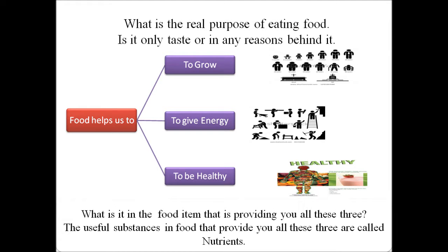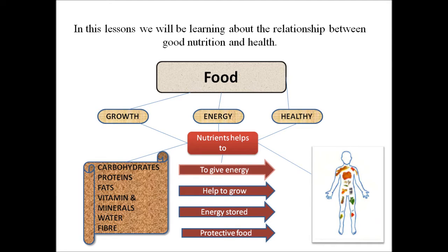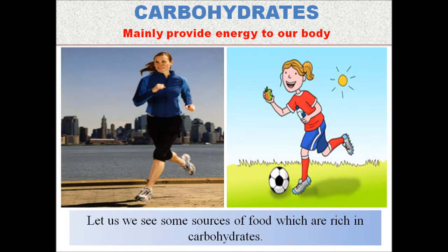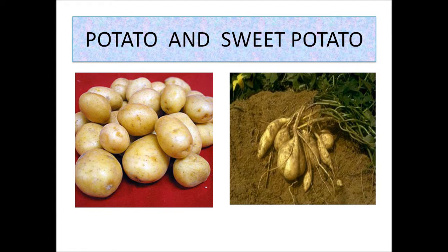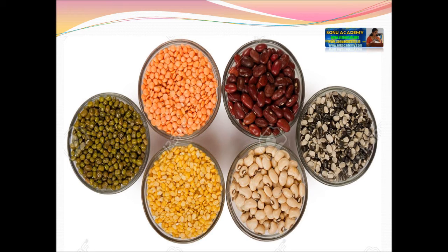Let us see what is the real purpose of eating food — is it only taste, or is there any reason behind it? Food helps us to get energy, to grow, and to be healthy. The useful substances in food that provide all three of these are called nutrients. Carbohydrates and fats give us energy to work and play. Examples rich in carbohydrates include rice, wheat, sweet potato, pulses, sugar, and bananas.